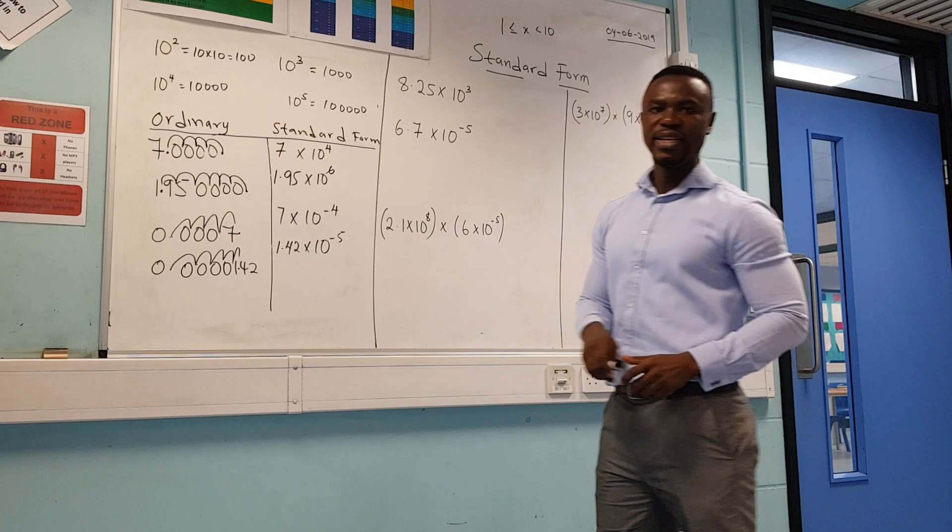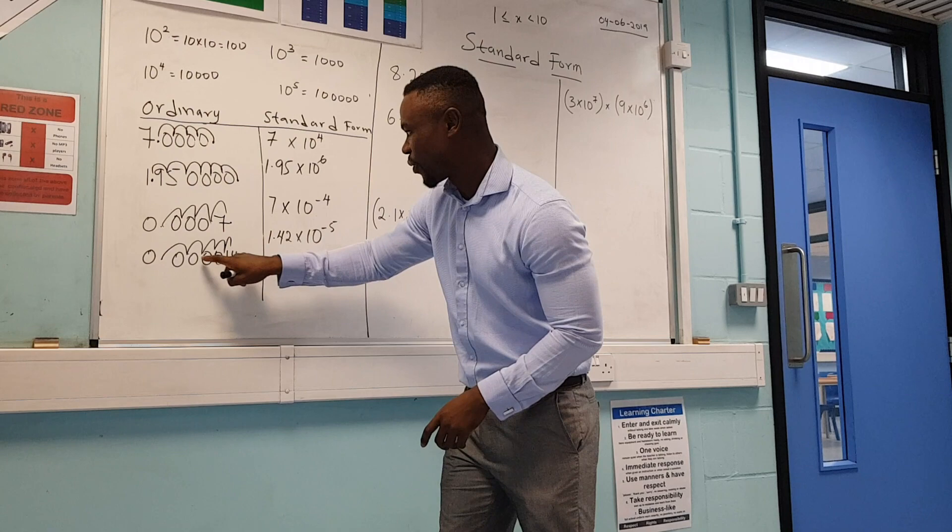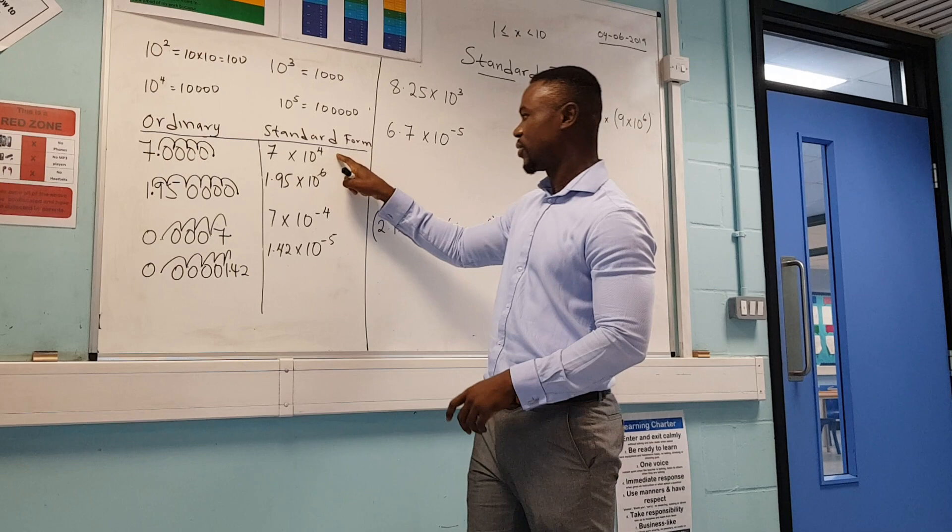The power tells you how many digits came before the significant figure. Here you can see there are 1, 2, 3, 4 zeros, giving a power of 4. Here there are 1, 2, 3, 4, 5, 6 zeros, giving a power of 6. And for the small numbers, 1, 2, 3, 4 zeros gives minus 4, and 1, 2, 3, 4, 5 gives minus 5.